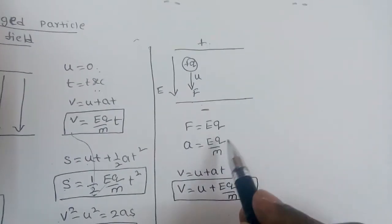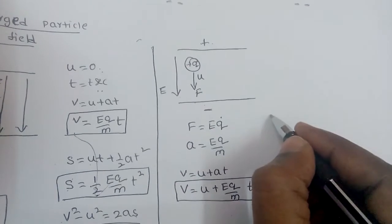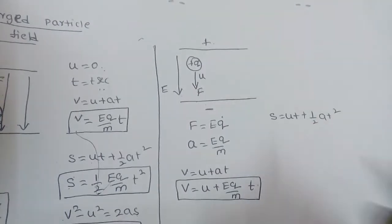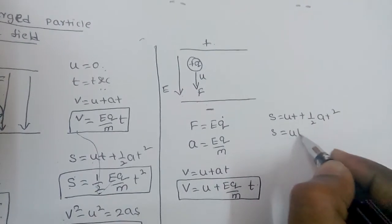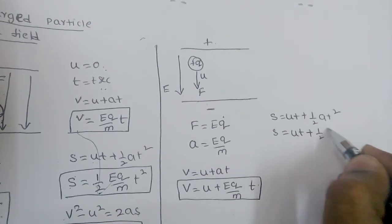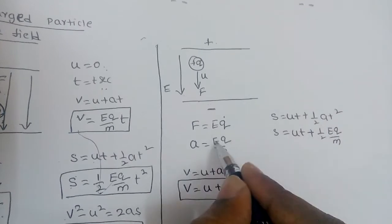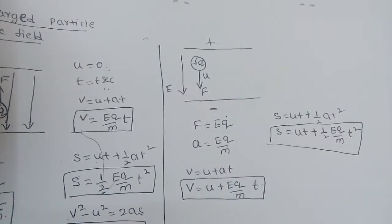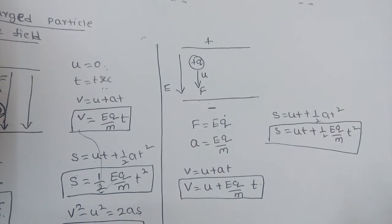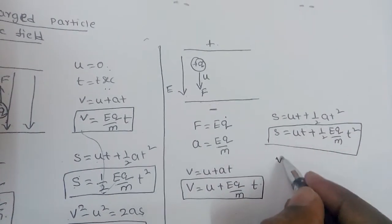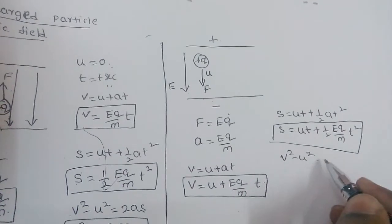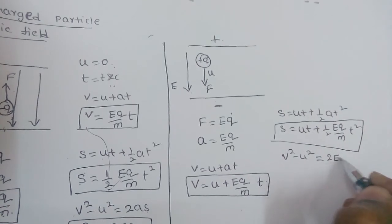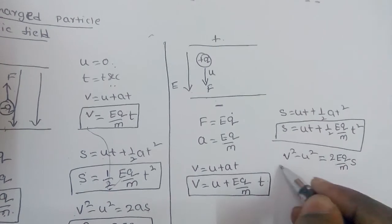To find the displacement after t seconds, we use s = Ut + ½at², which gives s = Ut + ½ × (Eq/m) × t². For the relation between velocity and displacement, the third equation of motion gives V² − U² = 2as = 2 × (Eq/m) × s.